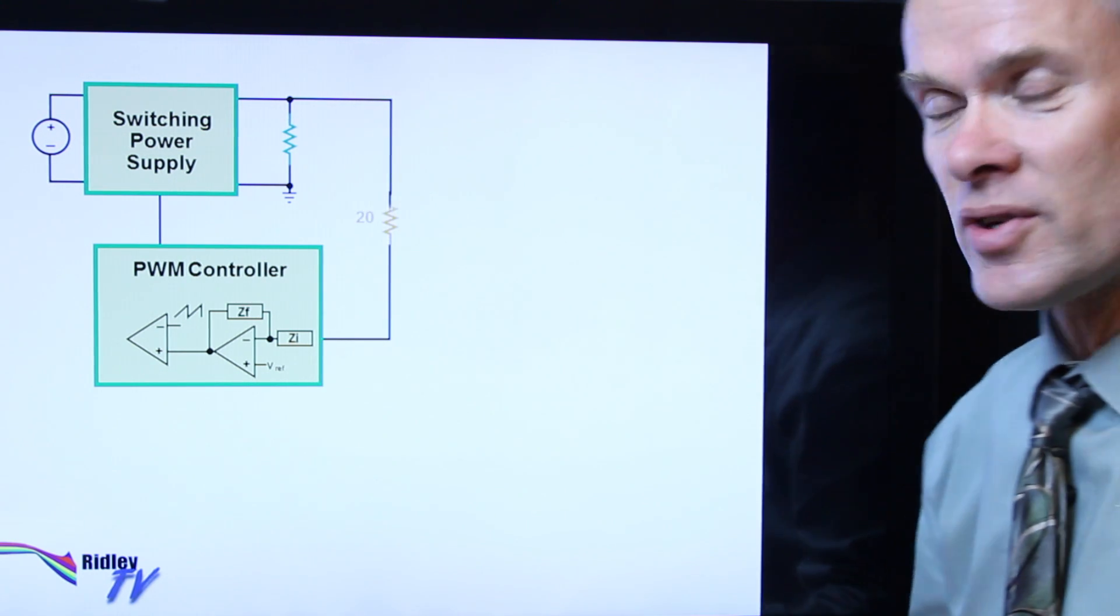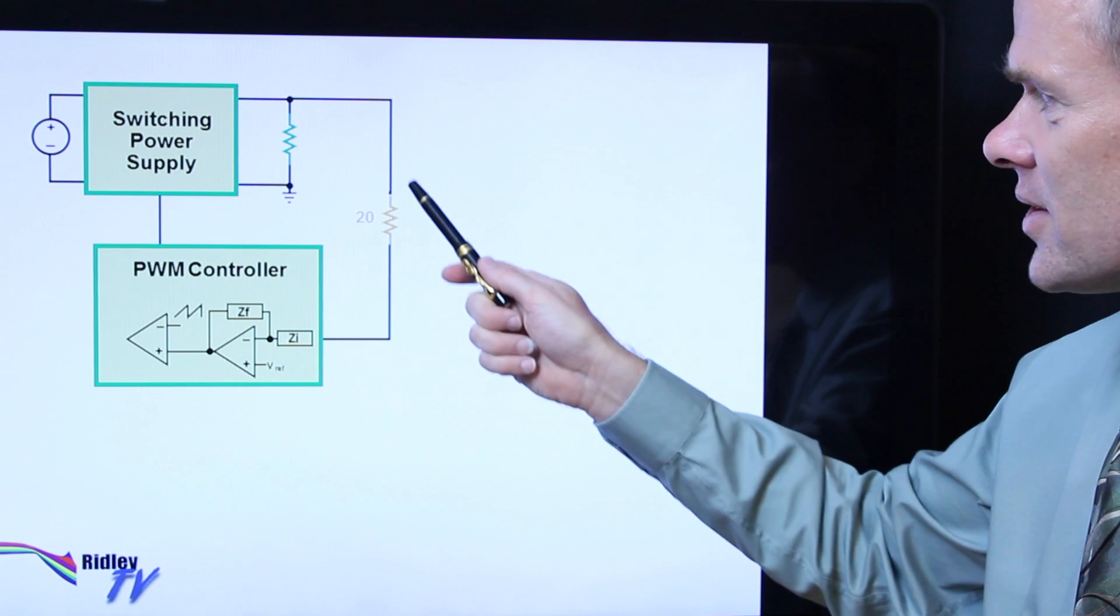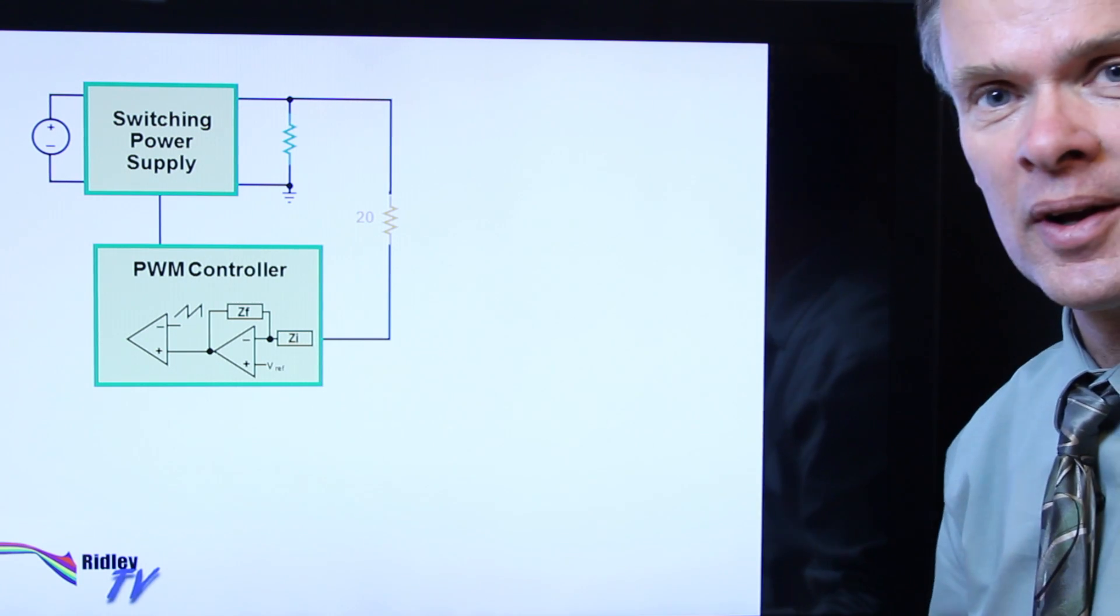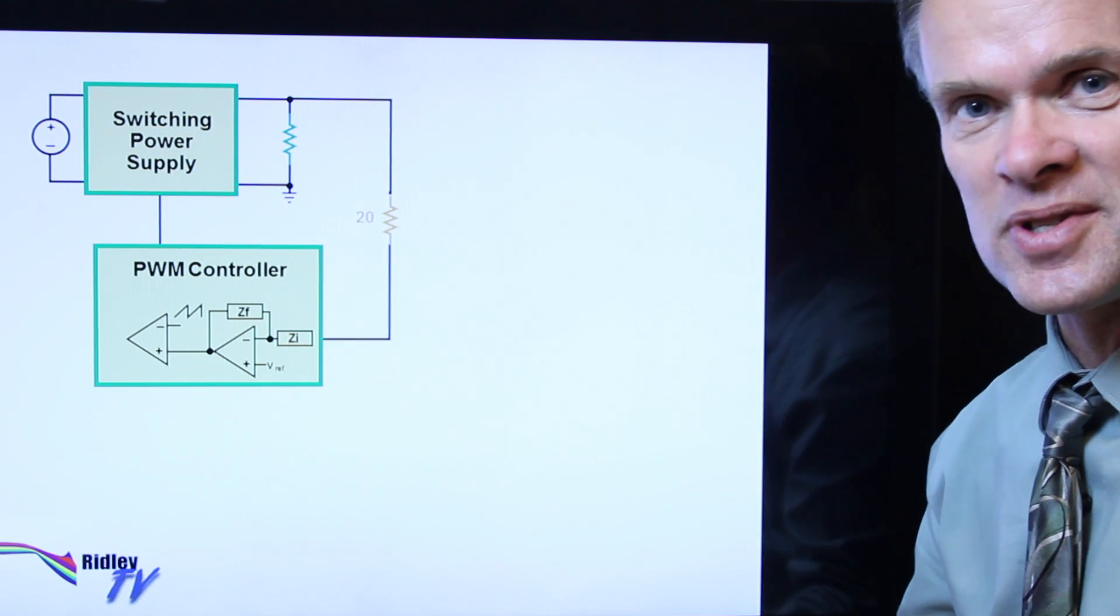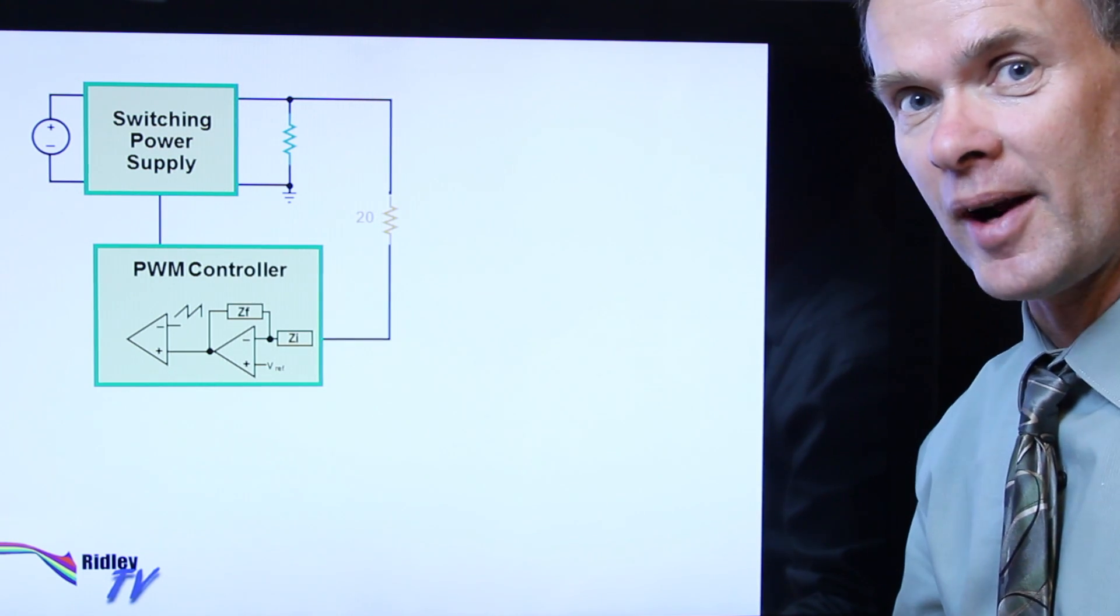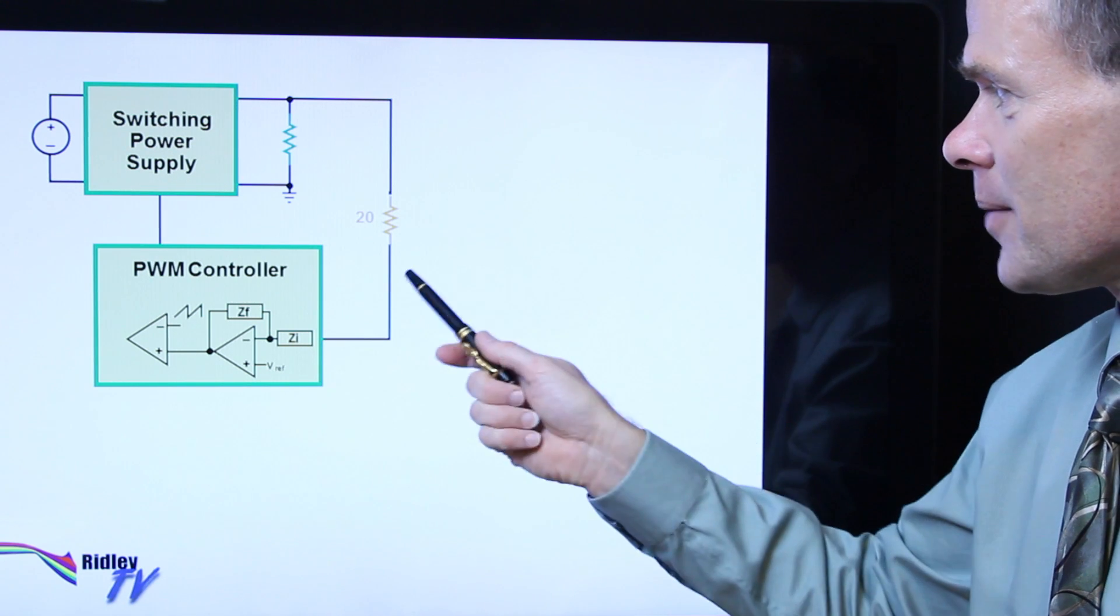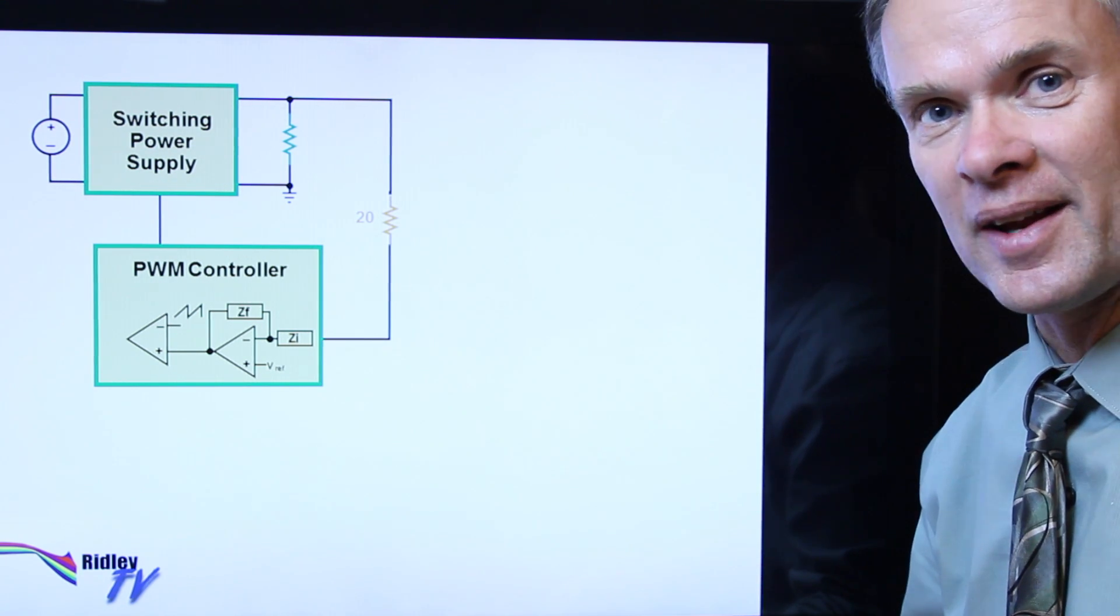And we do that in an interesting way. We don't actually open up the loop, but we insert a resistor in the loop. The purpose of this is to keep the loop gain closed for regulation purposes, so the power supply is operating at the correct point, but to be able to measure the input and output across this resistor to see what the loop gain is.